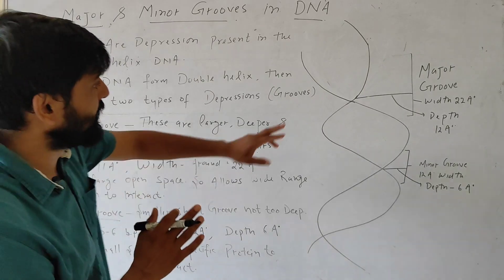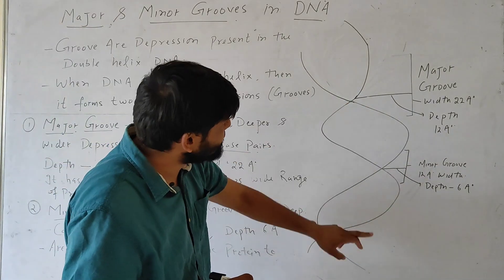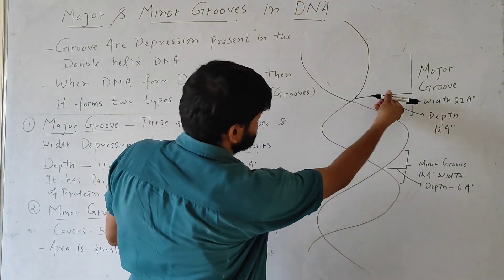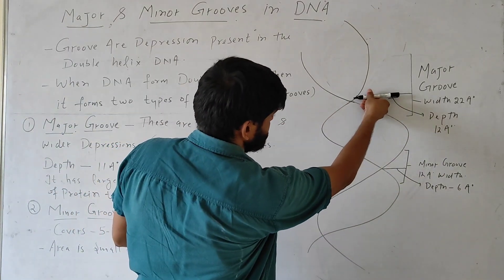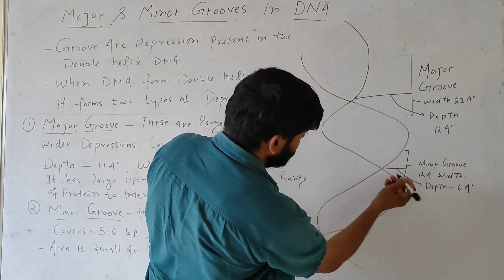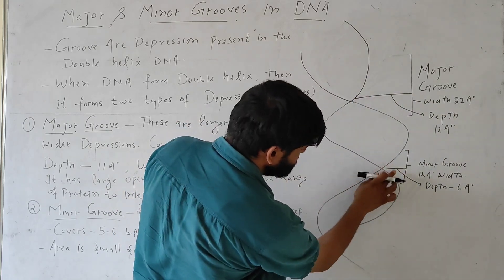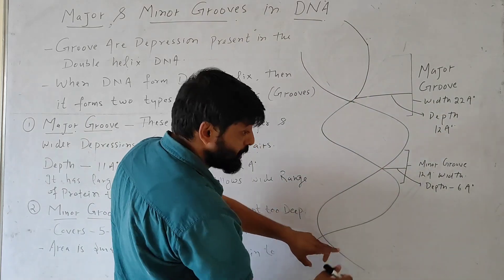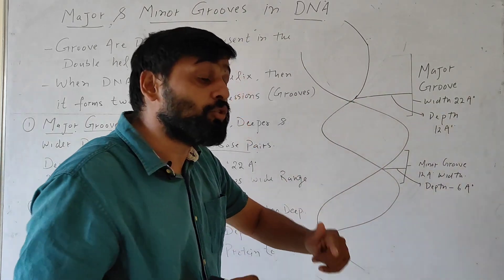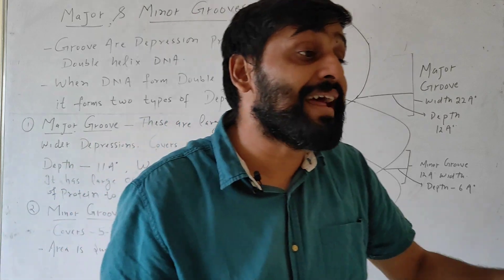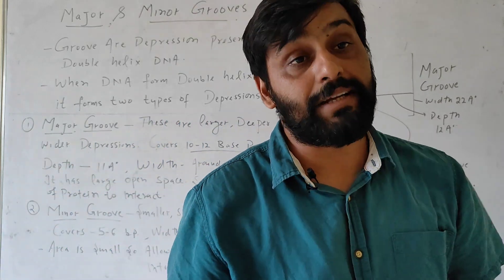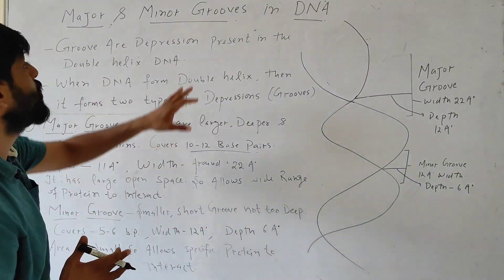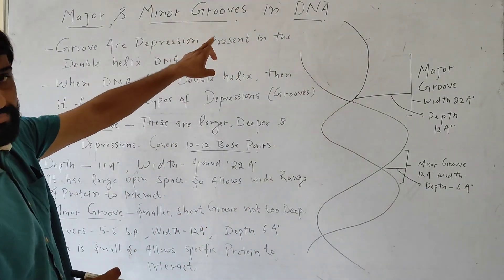So this is DNA — you can see that there are depressions. A space is present. It forms depressions at a regular interval in its structure. These depressions are called grooves.